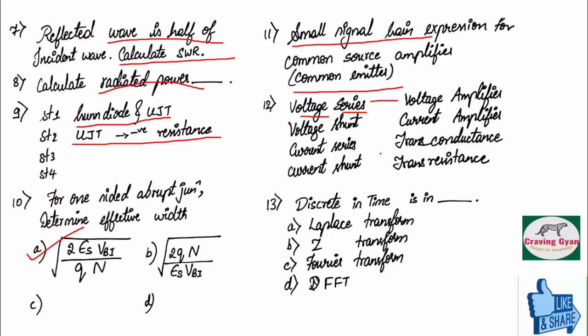Thirteenth question. Discrete in time is in. Laplace transforms, Z transforms, Fourier transforms, FFT.